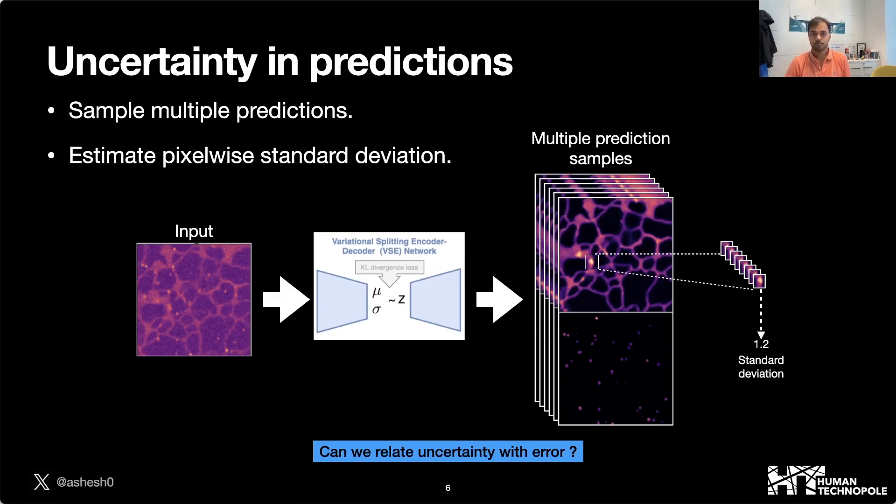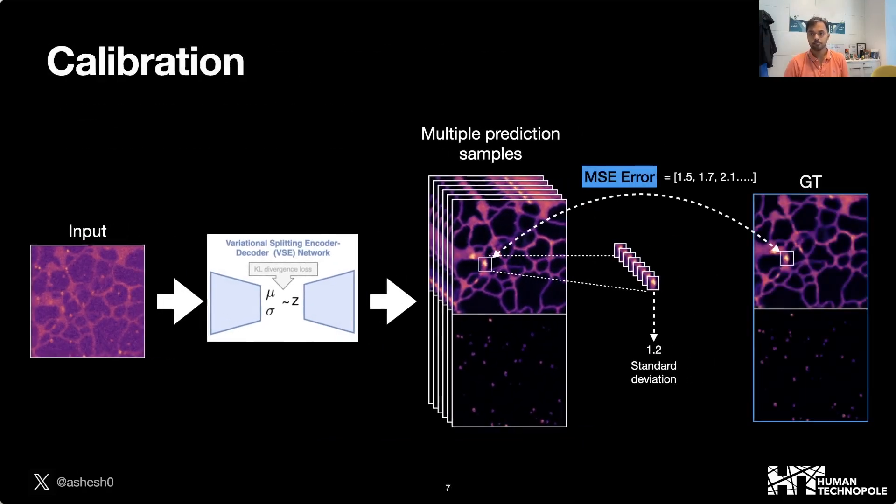We use the property of sampling to quantify uncertainty. For that, we sample multiple predictions and estimate the pixelwise standard deviation. We go one step further: since we have access to the high SNR ground truth, we compute the MSE error between the ground truth and the prediction. So now for every pixel we have a standard deviation and an MSE error.